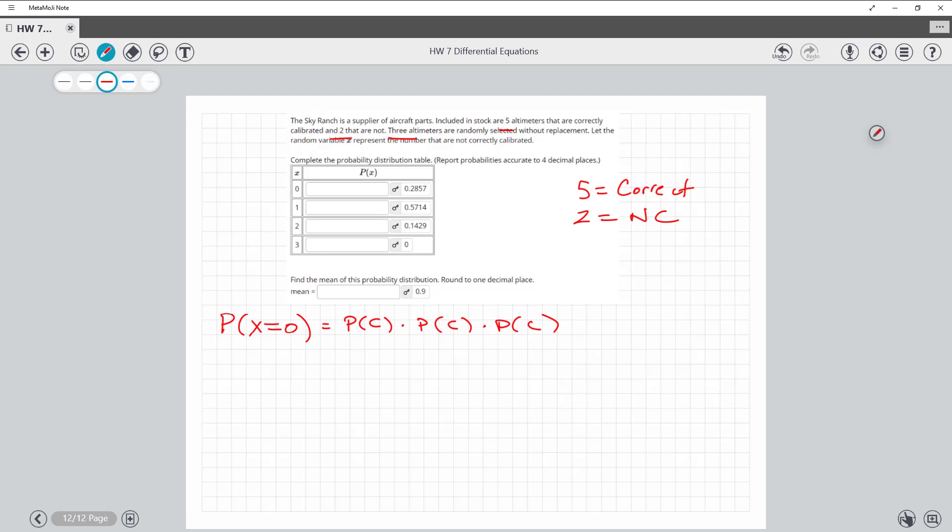I'm going to put my calculator. All right, so if there's five correct and two non-correct, then that means there's a total of seven. So all we do is plug in the probabilities. If the first one is correct, that's five out of the total. Notice it says that there is no replacement.